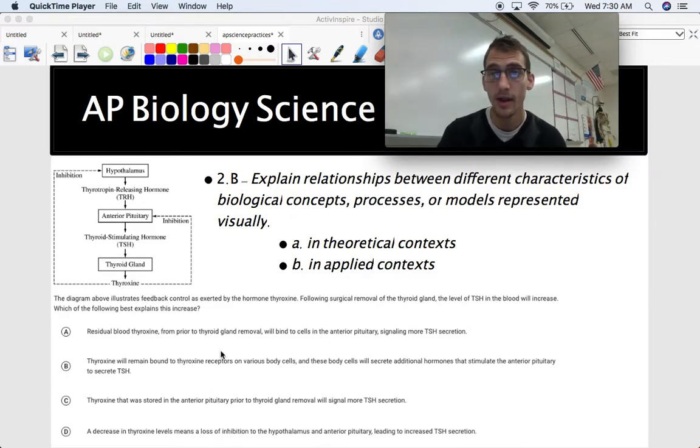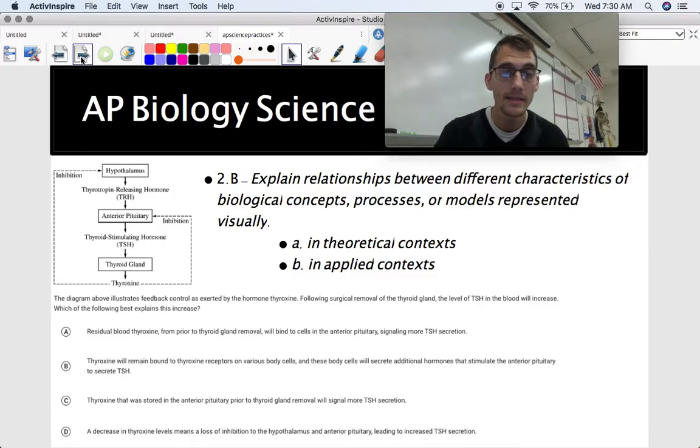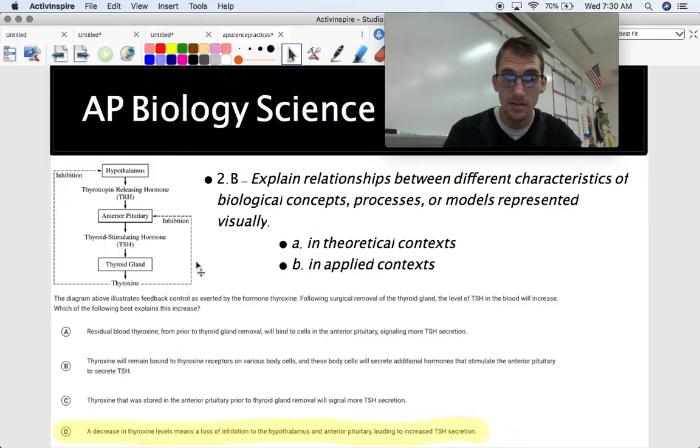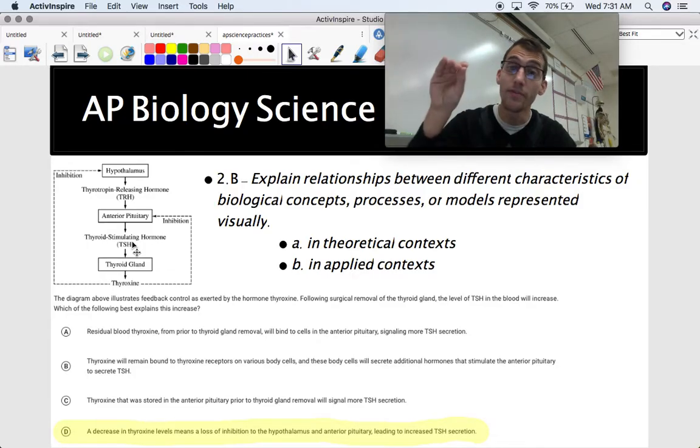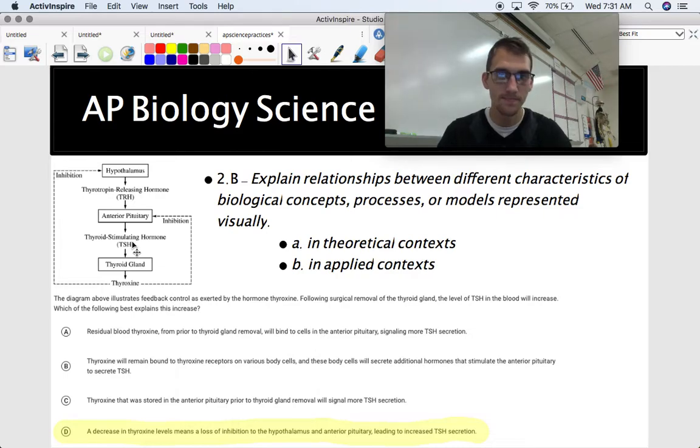And if you want to pause the video here to try and answer this yourself, go ahead and do that. I'm going to show you right now. So D, a decrease in thyroxine means a loss of inhibition to the hypothalamus and anterior pituitary, leading to increased TSH secretion. So you can see that if this decreases, there's less inhibition, which means there's going to be more of this TSH. So you've got to follow the flowchart one piece at a time in order to answer this question and explain. So that's 2.B.